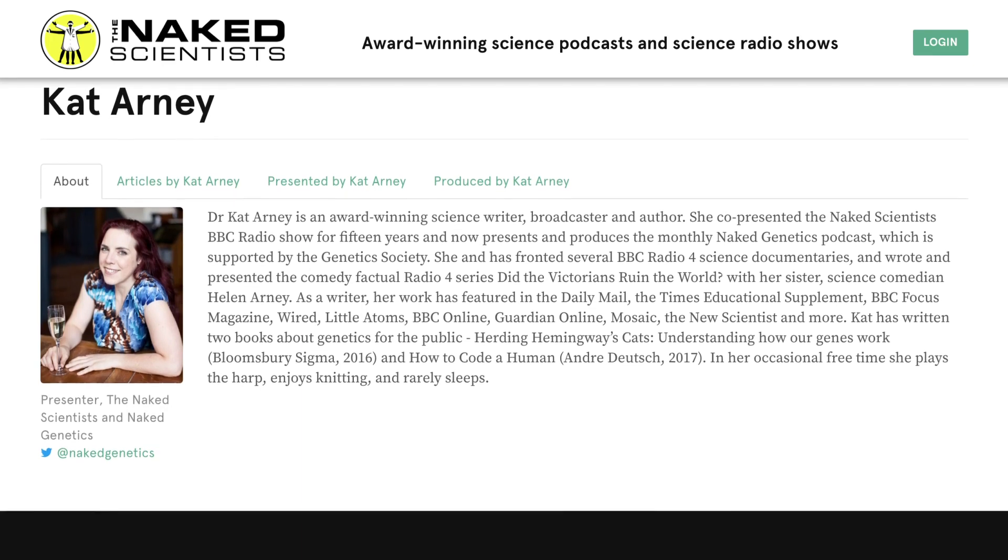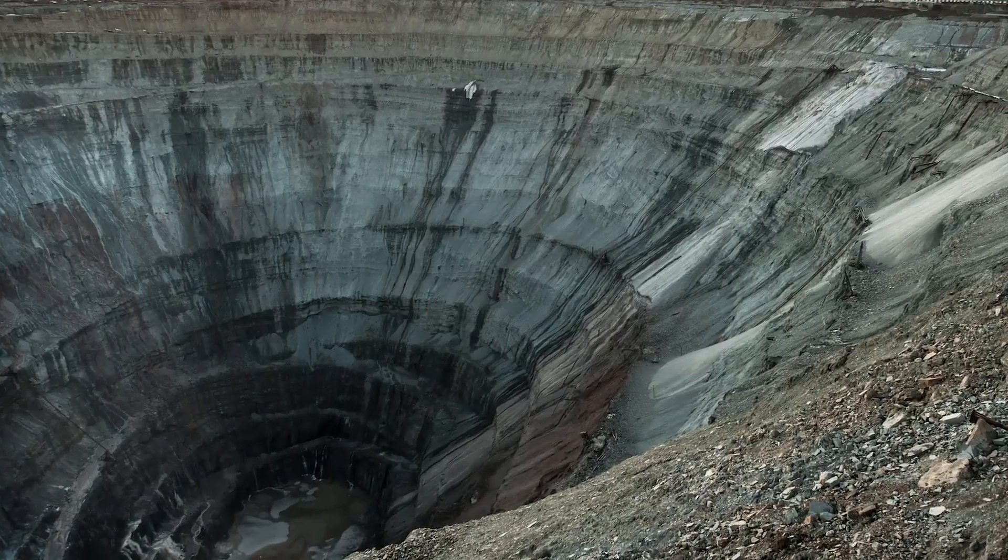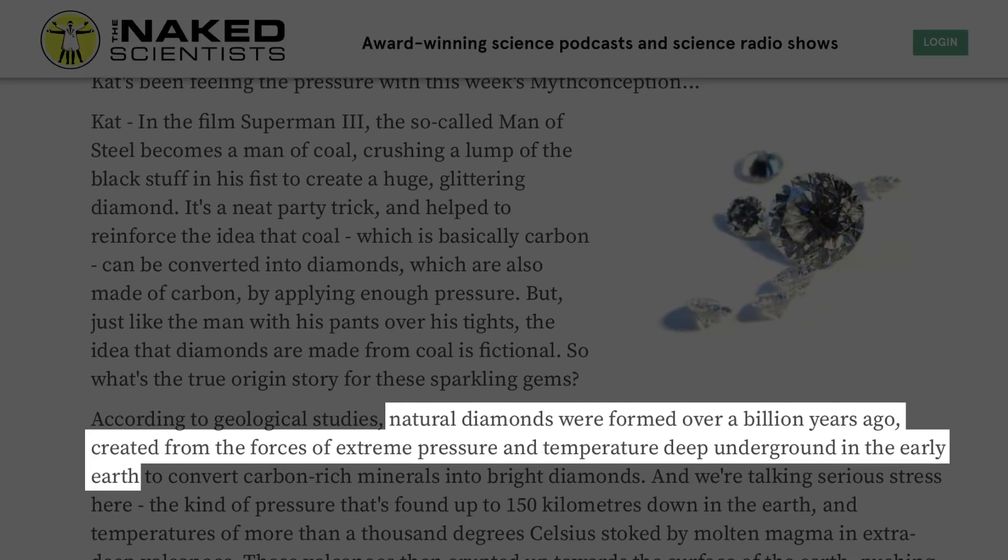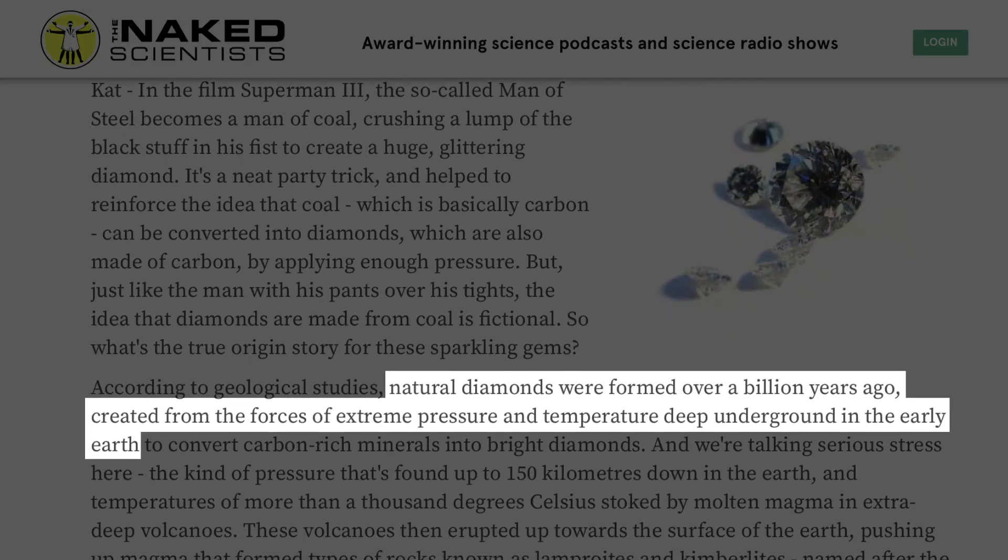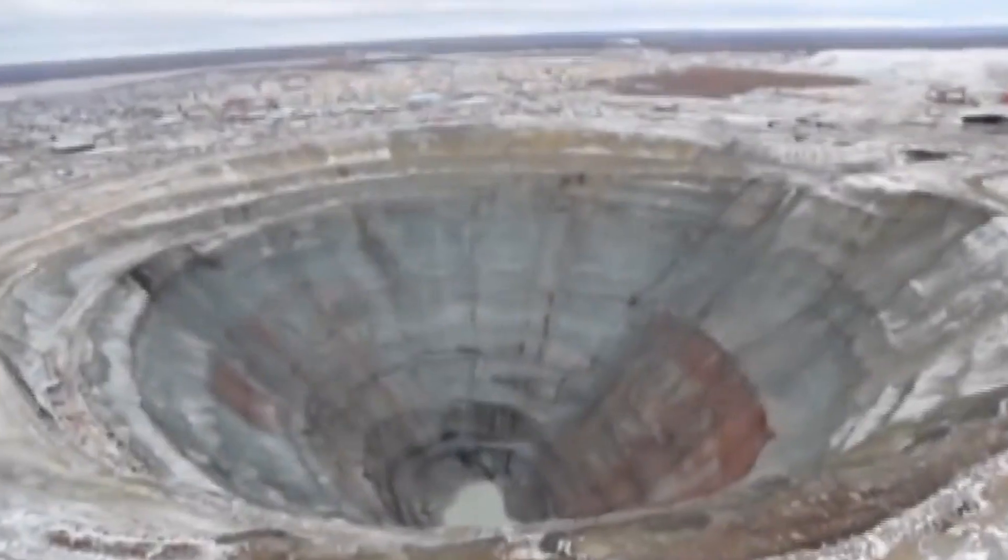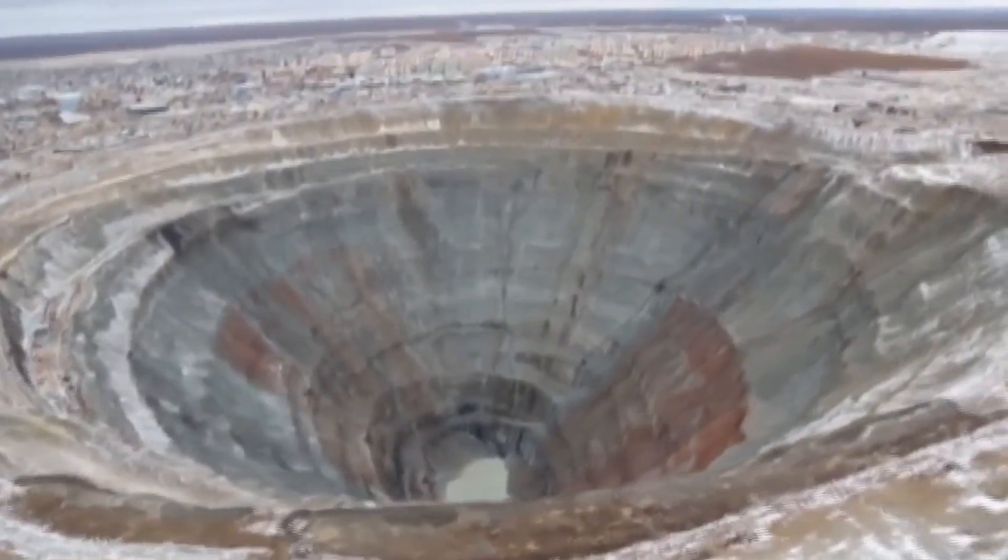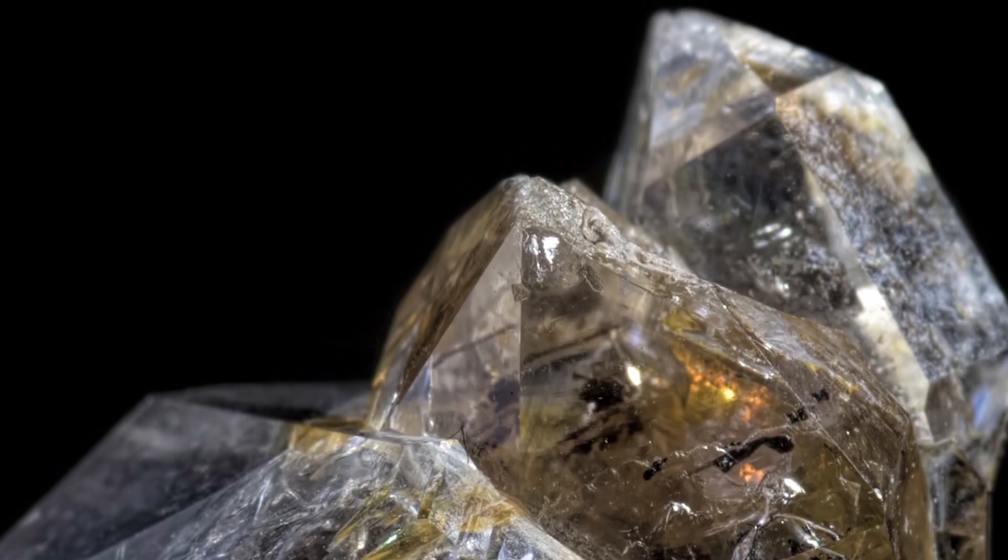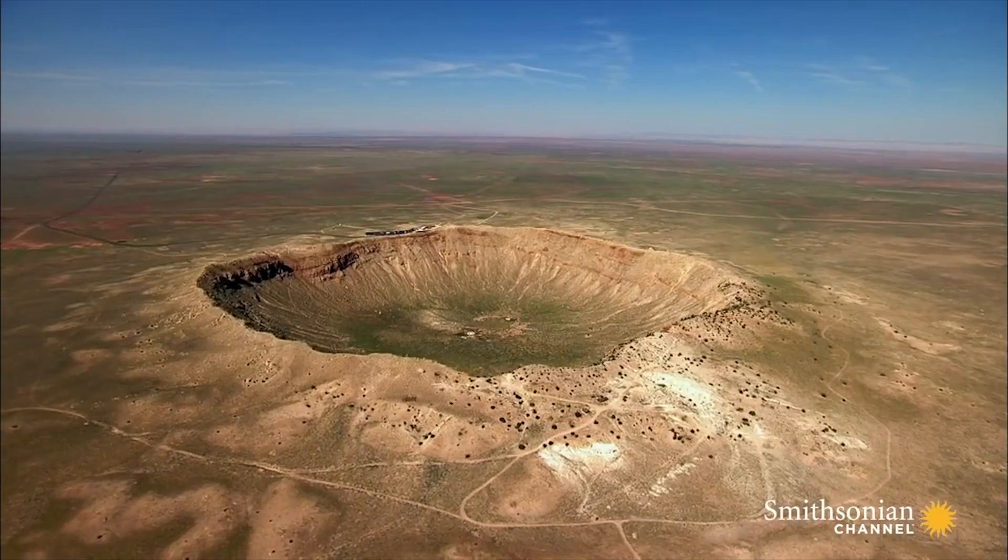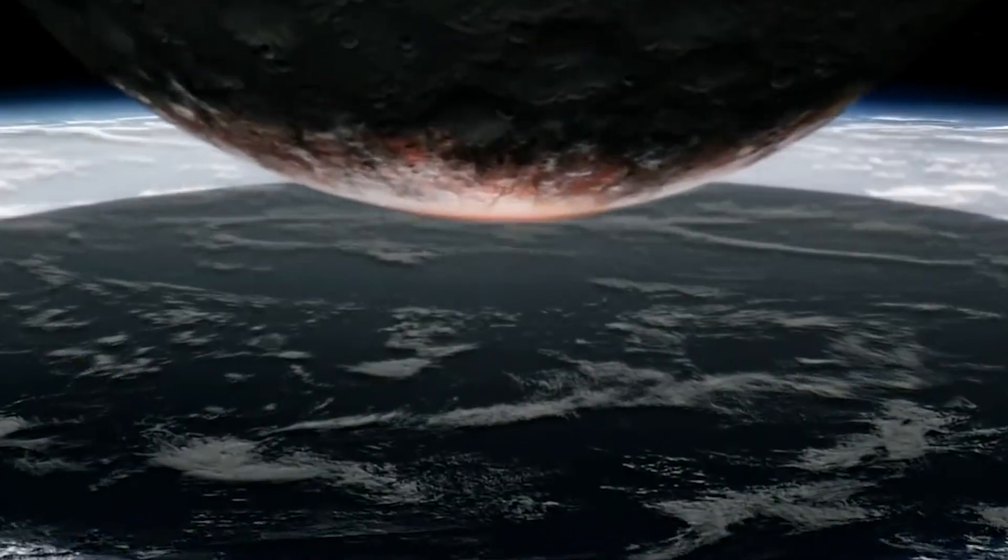Let's ask Dr. Kat Arney of The Naked Scientists. According to her, geological studies have shown natural diamonds were actually created about a billion years ago by factors like temperatures in the thousands of degrees and the kind of pressure you'd feel if you had around 100 miles of earth and rock on top of you. Those forces acted on carbon-rich minerals to form diamonds, and diamonds can also be formed by high-impact strikes caused by meteorites either hitting the earth or hitting each other in space.